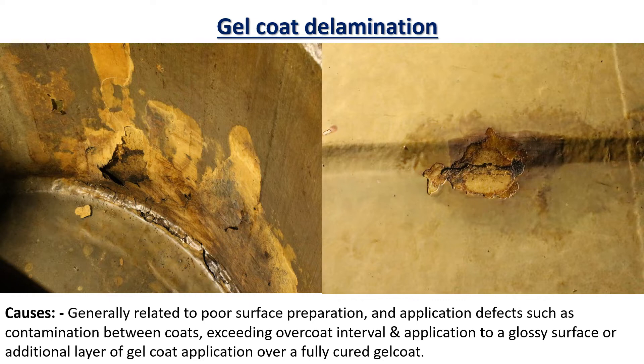Gel coat delamination mainly occurs due to poor surface preparation and application defects such as contamination between successive coats and exceeding the overcoat interval. If the overcoating intervals of paint are exceeded, the bonding between the successive layers of coating will reduce and the top layer will start to peel off.